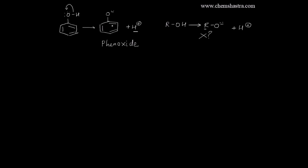After the oxygen-hydrogen bond dissociates, the anion we get — the phenoxide ion — is much more stable compared to the alkoxide ion. This is because in the phenoxide case, you have a benzene or aryl system, which allows resonance — a possibility that doesn't exist at all in the alkoxide case. So the phenoxide ion is much more stable, and that's why phenols are much more acidic than alcohols.